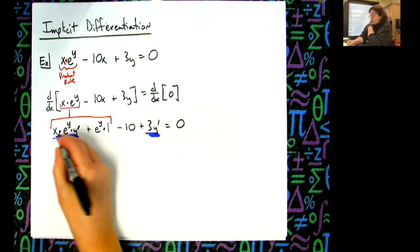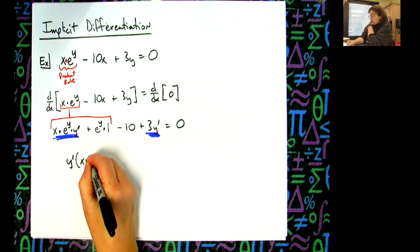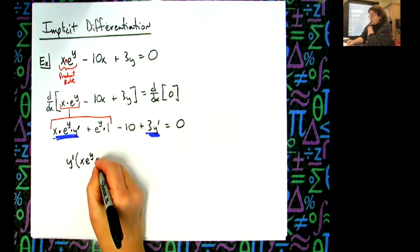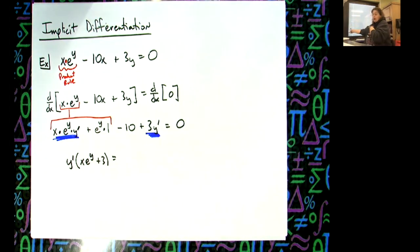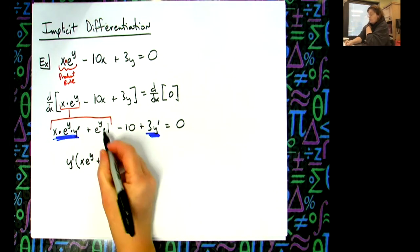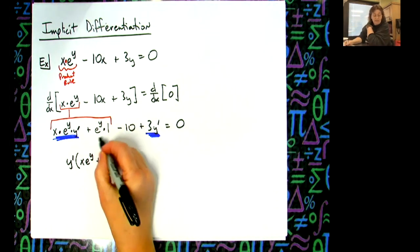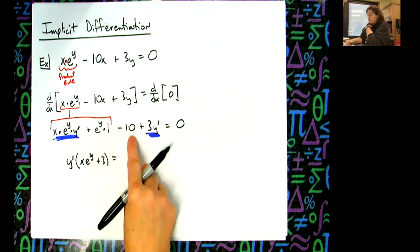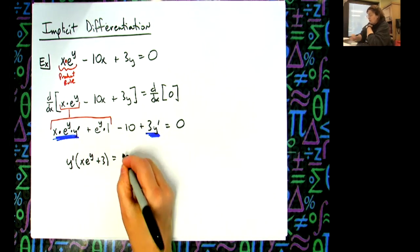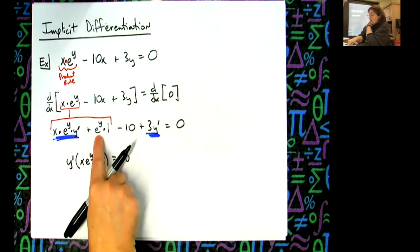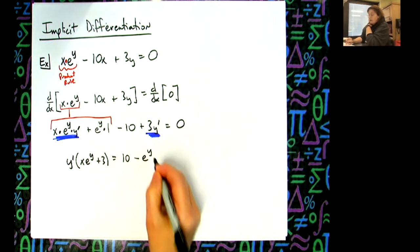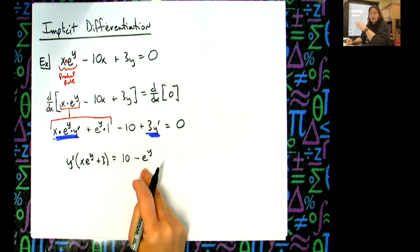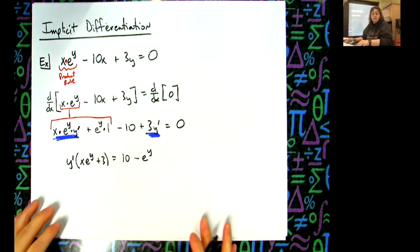Factor out the y prime. This will just be x e to the y with a 3 right there. These two get moved to the right hand side. Since this one's going to become negative, I'm going to write it second. This will be positive, so I'm going to write 10. When I cross the equal sign it becomes positive. When I cross the equal sign here it becomes negative. I just chose to put them in that order so that I wouldn't have a negative leading coefficient.